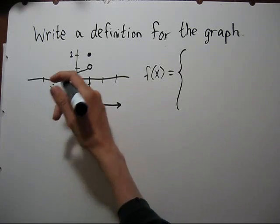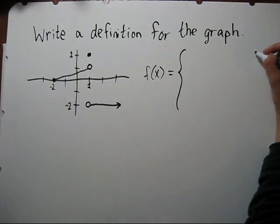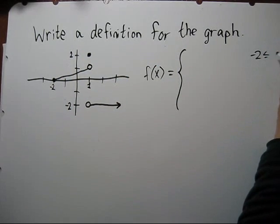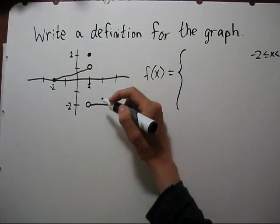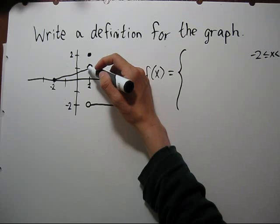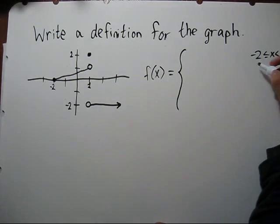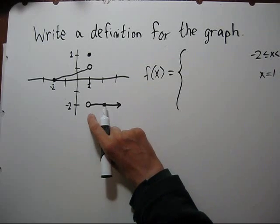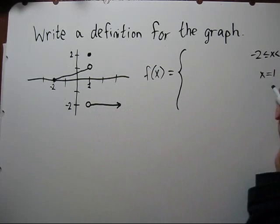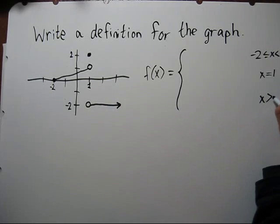On the left we have negative 2, and we go up to 1, but we don't include 1. And then the function changes at 1. There's the dot there, so we're going to have an x equals 1. And then when we're greater than 1 we have a different formula that we'll need. So we'll have an x greater than 1.